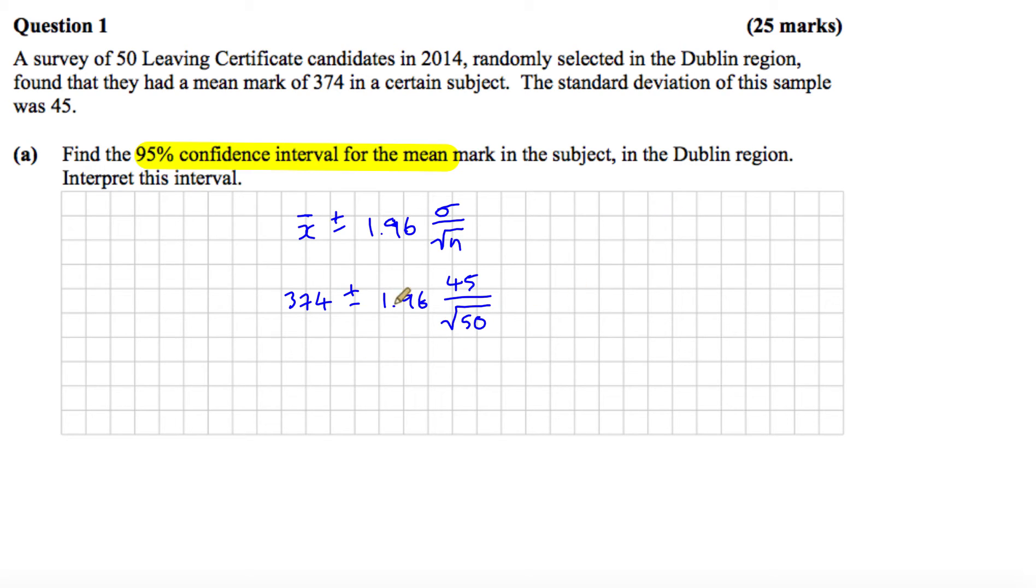So now we're just going to work this out in our calculator once with plus and once with minus. So the first one would be 374 minus 1.96 times 45 over root 50. And that is equal to 361.527, we'll just round it to 3 decimal places.